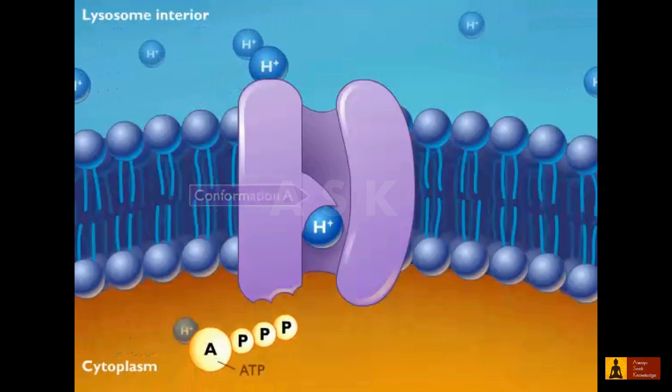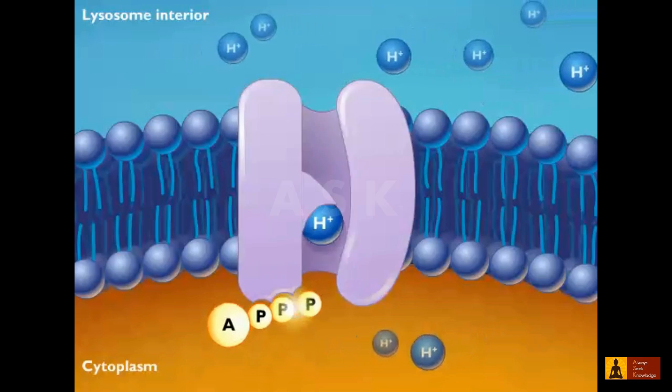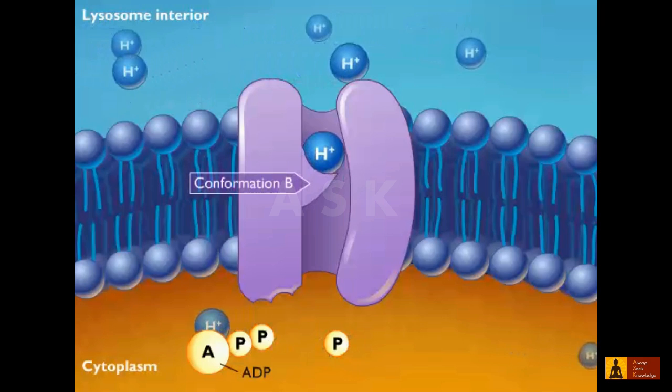The energy from ATP then drives the transport of the proton to the outside of the cell through the formation of conformation B.